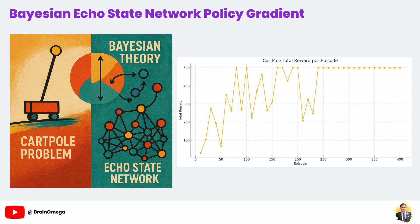By using the Bayesian ESN as the policy network, our agent can both learn from the environment efficiently and handle uncertainty naturally. By combining the strengths of reinforcement learning, the efficiency and temporal modeling of echo-state networks, and the uncertainty awareness of Bayesian inference, we create a system that is both powerful and practical.